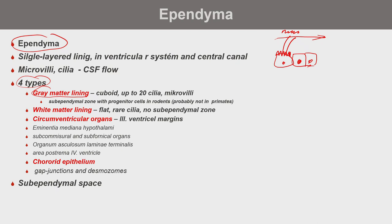Rodents include rats, squirrels, and similar animals. In rodents, researchers have found progenitor cells — primitive, not fully differentiated cells capable of future differentiation — in the sub-ependymal zone. This is significant as it suggests some brain regeneration potential. However, this is not functional in primates. In contrast, where white matter faces the ventricle (e.g., the fornix), the ependymal cells are flat with rare cilia and no sub-ependymal zone.